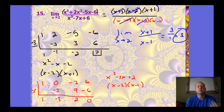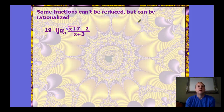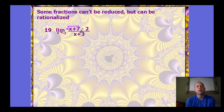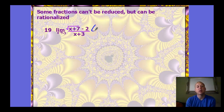So if we can factor quickly, do that. But we may need to use synthetic division and graphing to find zeros. Now, some fractions cannot be reduced, but we can still rationalize — that's another technique. If we plug −3 into this example, we get a zero in the denominator, but we can't reduce anything. Instead, we're going to try to put the square root back in the denominator.